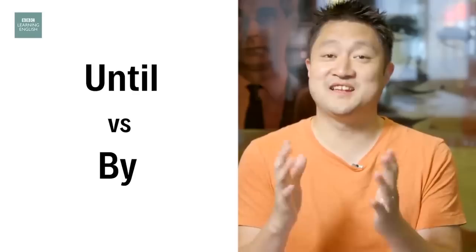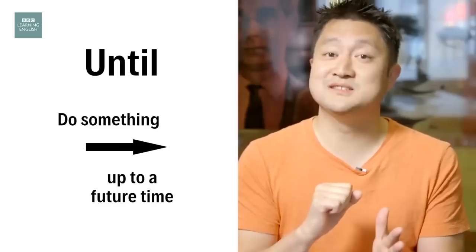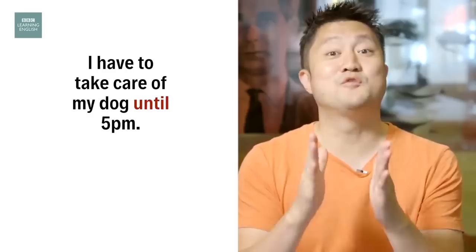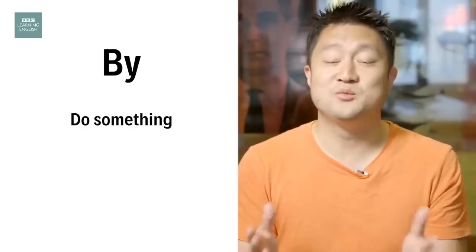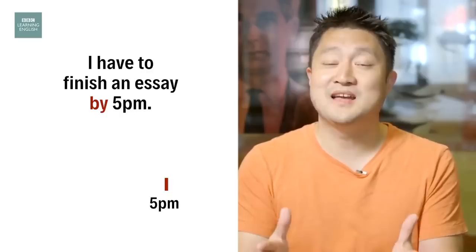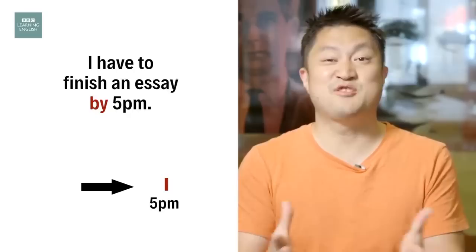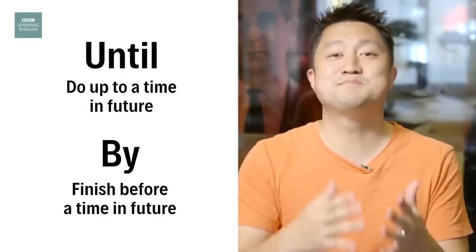Hi guys, this is Keith from BBC Learning English. Today I'm going to tell you the differences between 'until' and 'by'. We use 'until' to talk about doing something up to a certain point in time. If I say I have to take care of my dog until 5pm, it means I will start now and stop at 5pm. On the other hand, we use 'by' to talk about doing something before a future time or a deadline. If I say I have to finish an essay by 5pm, I can start anytime but I will make sure I've finished by 5pm — I may even finish at 3pm. So 'until' describes doing something up to a certain point in time, and 'by' describes doing something before a deadline.